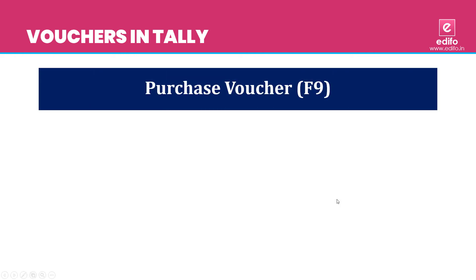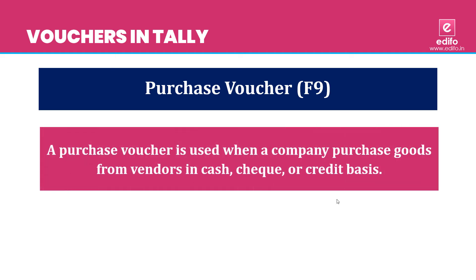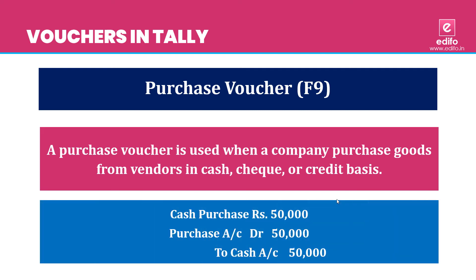The next voucher is Purchase Voucher, with shortcut F9. A purchase voucher is used when a company purchases goods from vendors in cash, cheque, or on credit basis. You can use the purchase voucher for recording all types of purchase transactions. For example, cash purchase Rs. 50,000: journal entry is purchase account debit to cash.